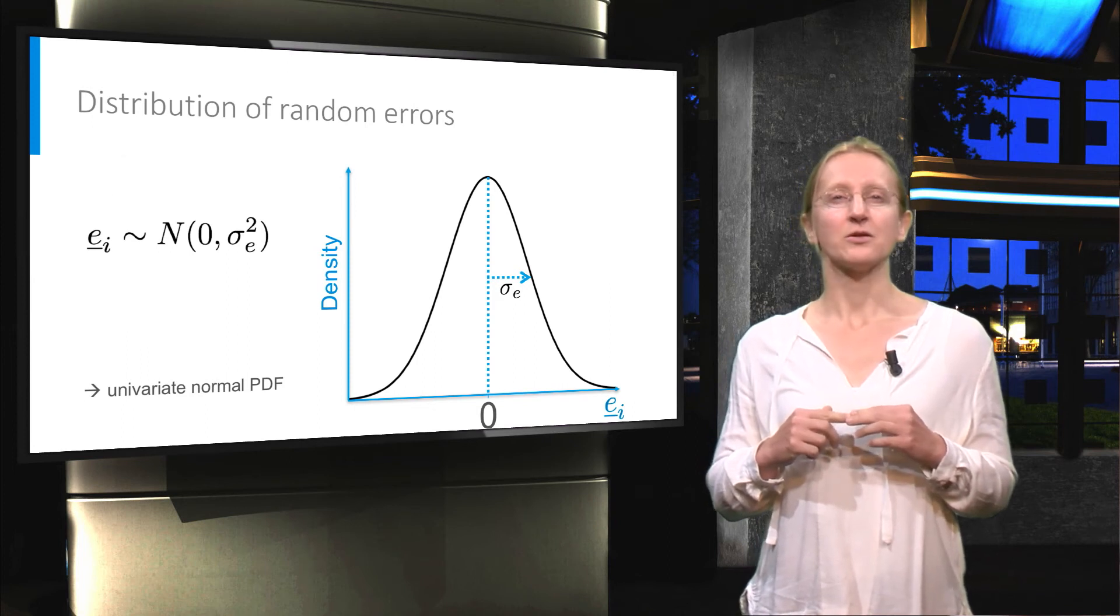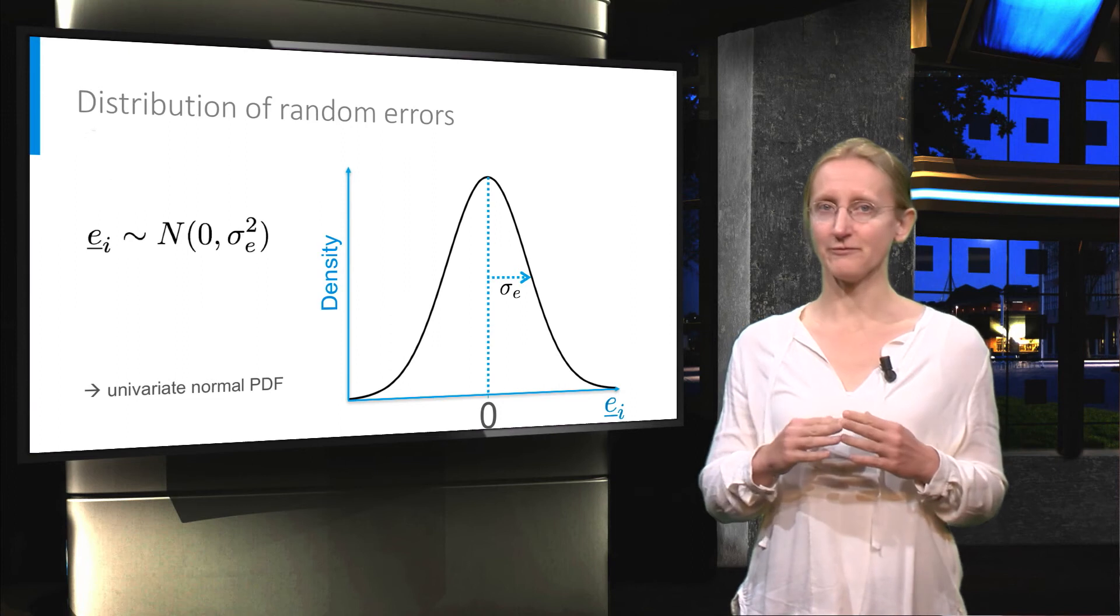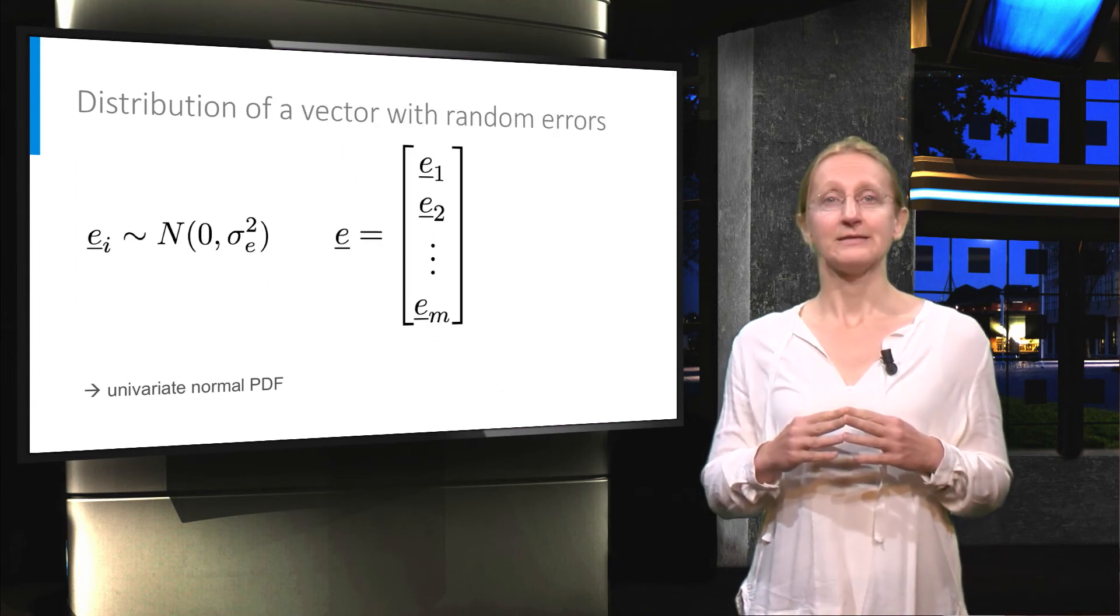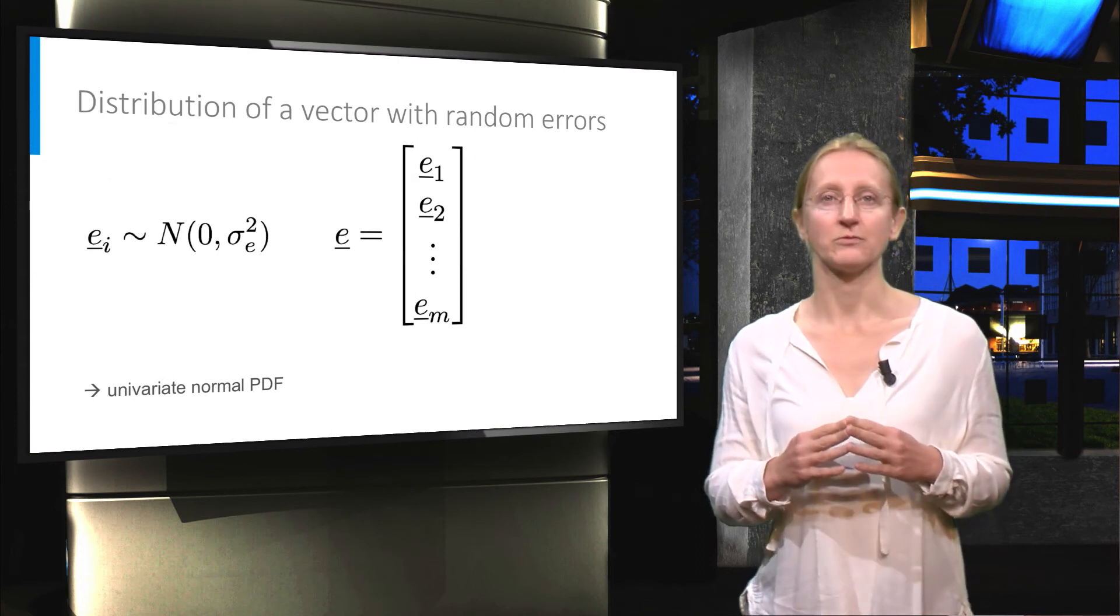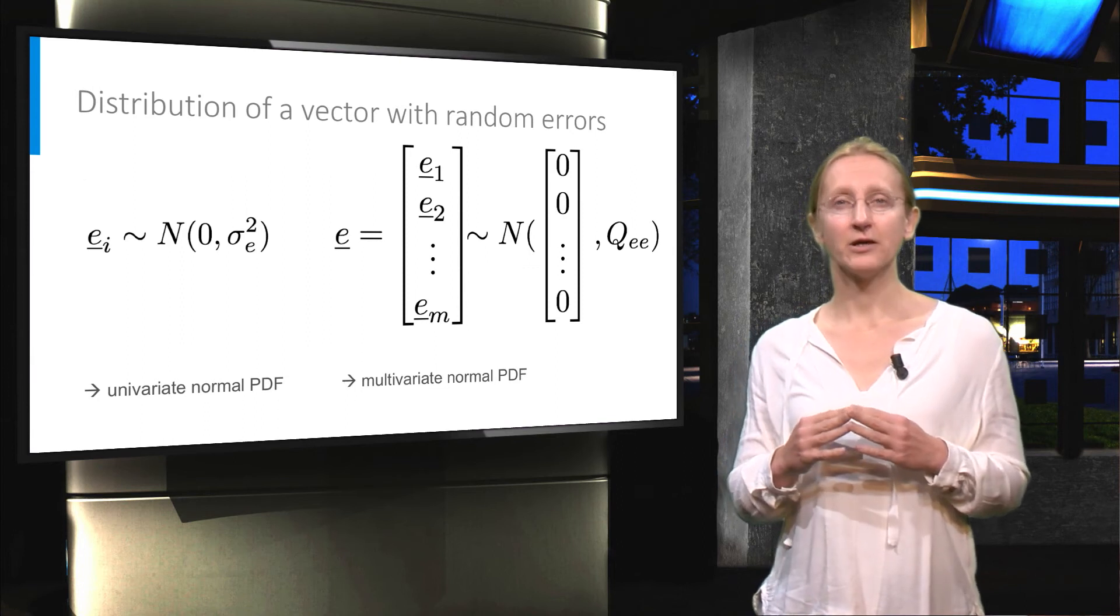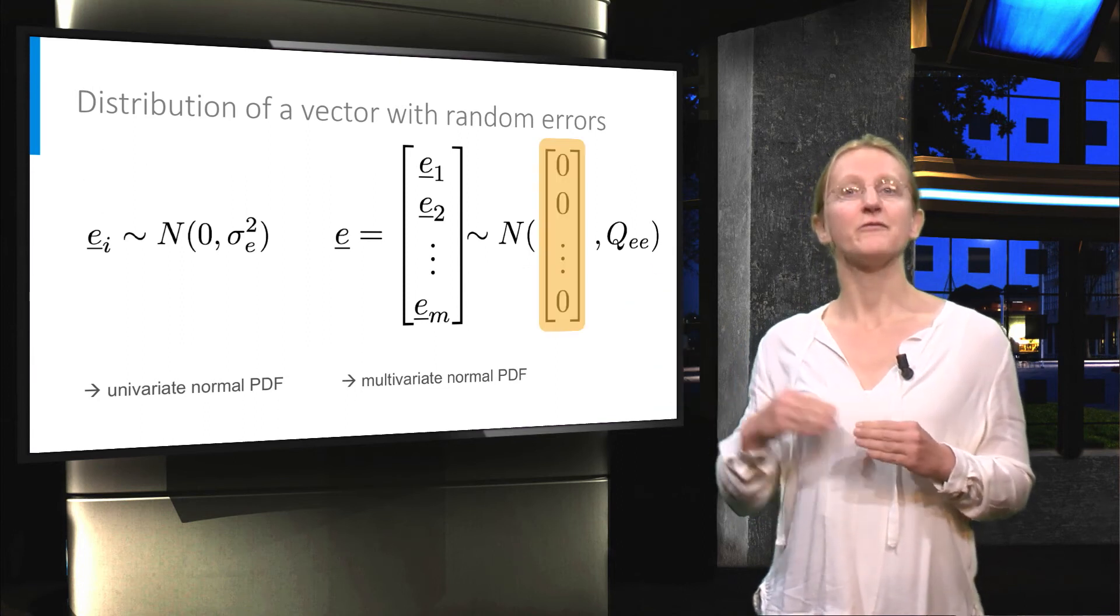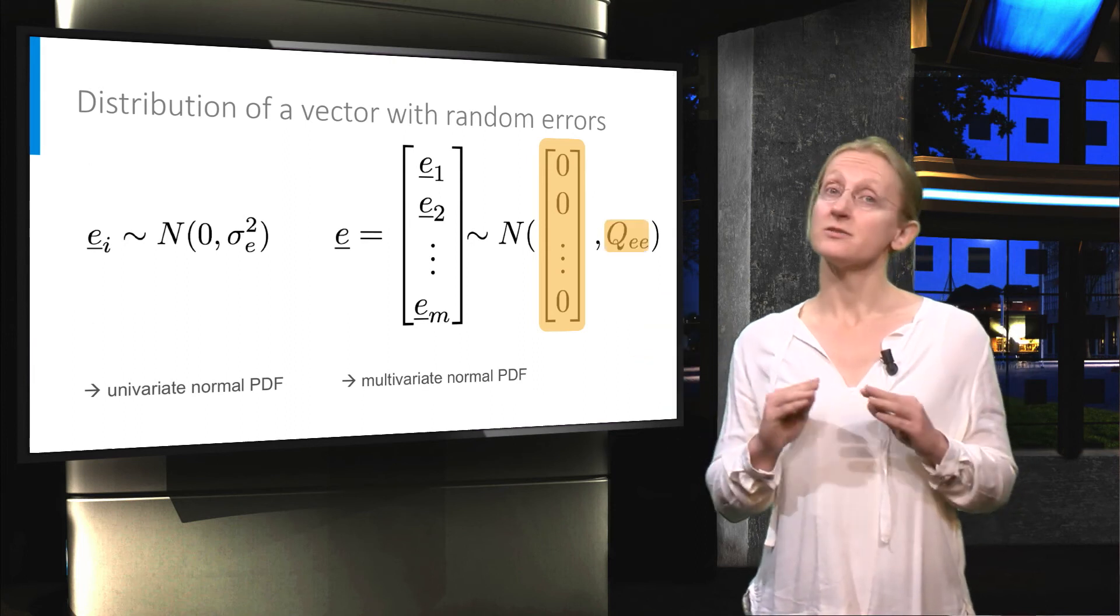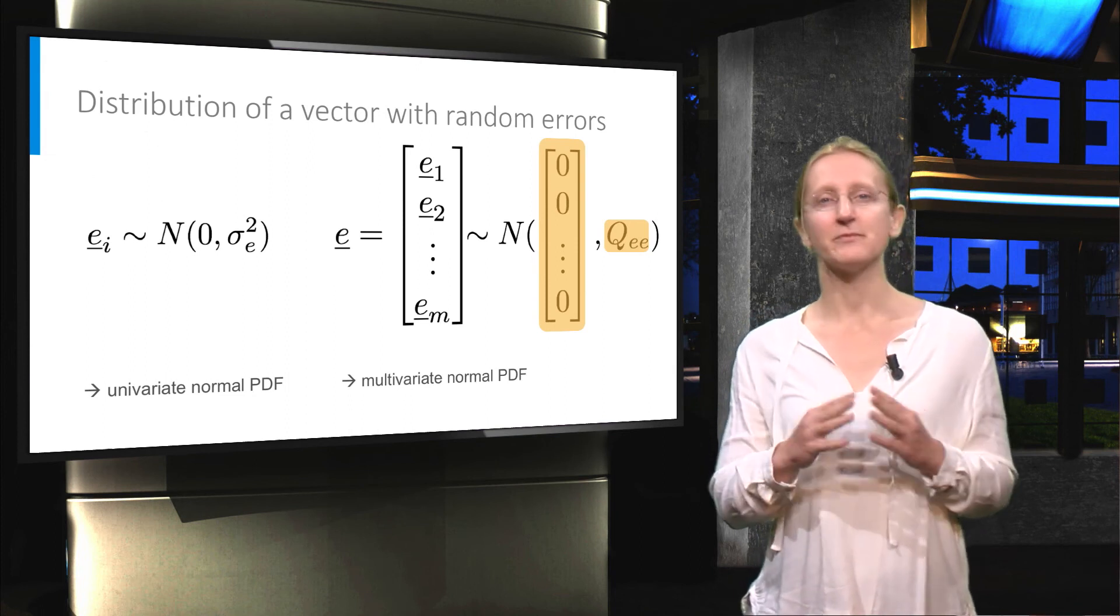How about the multivariate case, where we are interested in the distribution of a vector of m random errors? This vector will follow the multivariate normal distribution, which depends on the vector with mean values, in this case the 0 vector and the covariance matrix. In a two-dimensional case we can still visualize this normal PDF. For higher dimensions we cannot.